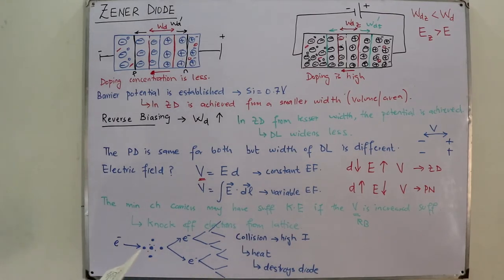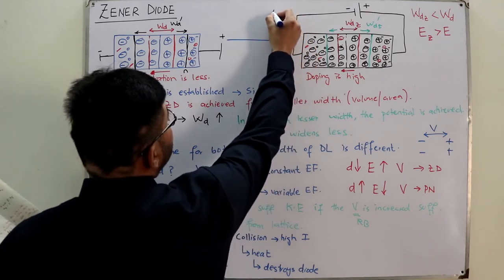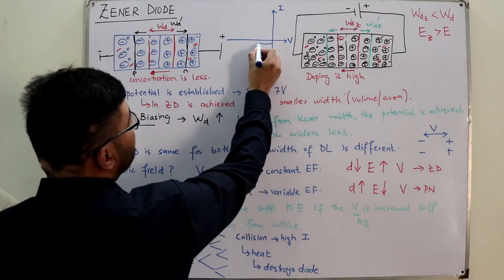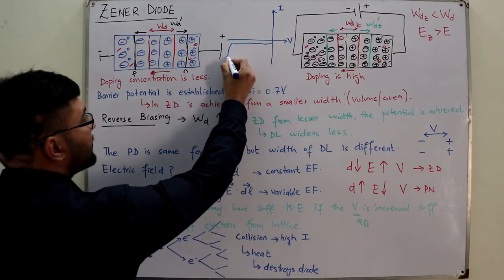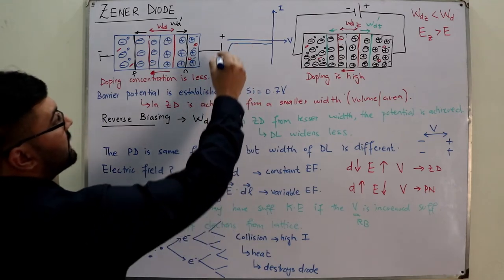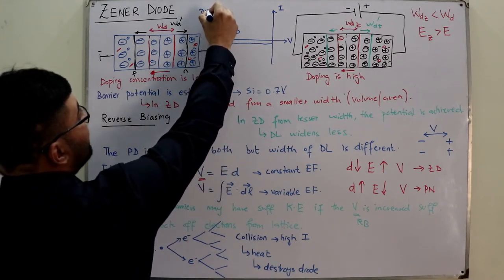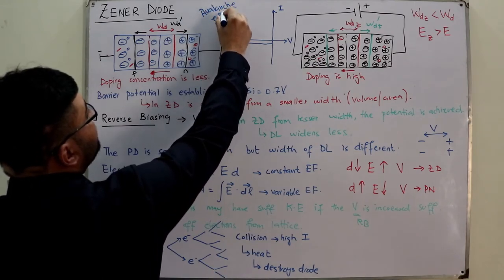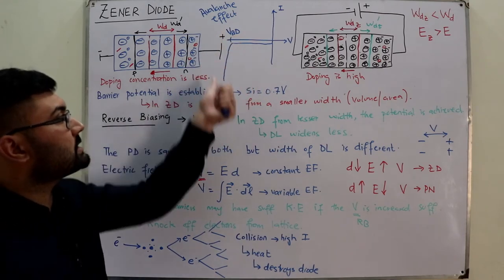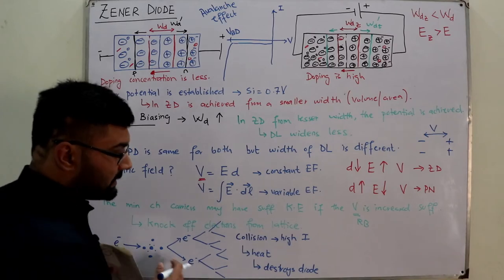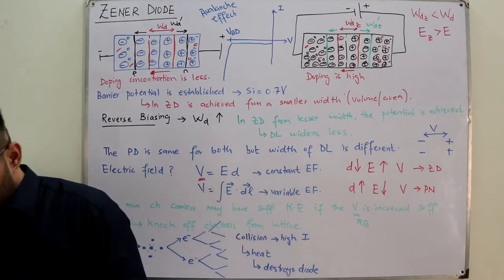Looking at the V-I characteristics: in the reverse bias region, a very small minority current flows initially. When the voltage reaches the breakdown voltage, there is a sharp rise in current. This is the breakdown region, and the effect is called the avalanche effect — the diode is destroyed here. That is why we do not take an ordinary diode to its breakdown voltage.